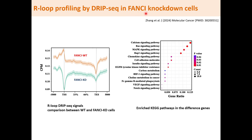FANCI is an R-loop regulator that is upregulated in almost all cancer types in the Cancer Genome Atlas (TCGA), and its high expression correlates with poor cancer prognosis. Genome-wide R-loops were profiled by DRIP-seq and R-loop signals along gene length were plotted. FANCI knockdown causes large loss of R-loops, and the R-loop changes are significantly enriched in cancer progression-associated pathways such as RAS and MAPK kinase signaling pathways.